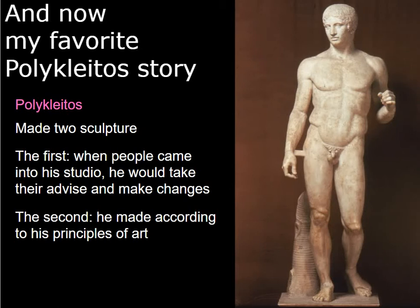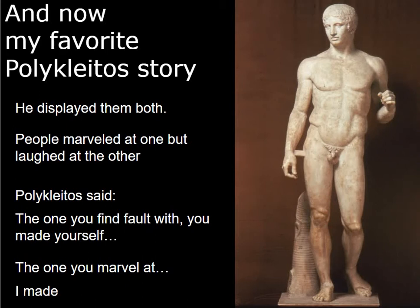Polykleitos actually made two sculptures. When people would come into his studio, he would show them the first sculpture and ask what's wrong with it. They'd suggest changes. The other sculpture he made, he stuck to his guns and used his canon to develop it. When he was done, he displayed both of them. All the people were laughing at one of them and saying, you did such a terrible job, Polykleitos. And Polykleitos said, the one that you find flawed — that's the one you made, because I followed your advice. And the one you marvel at, that's the one I made. That's why Polykleitos was so cool.